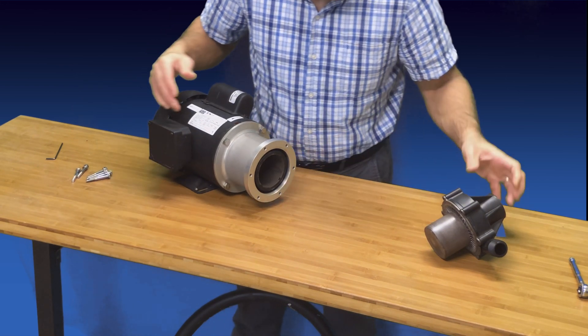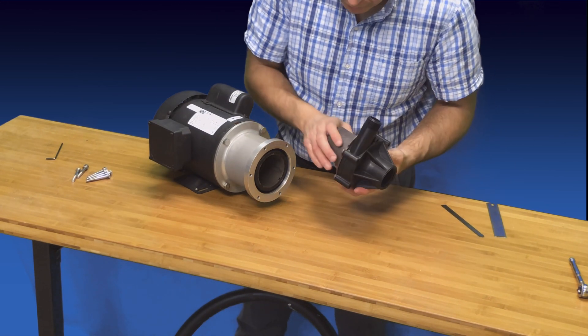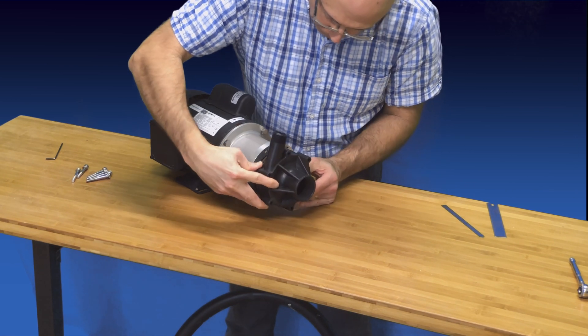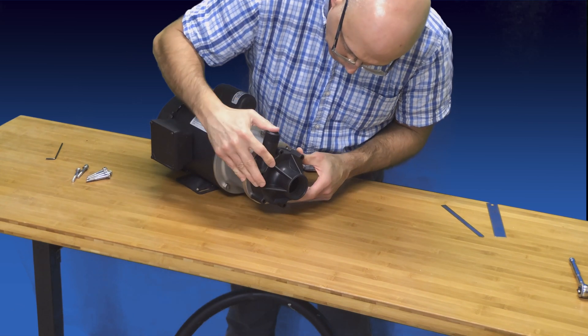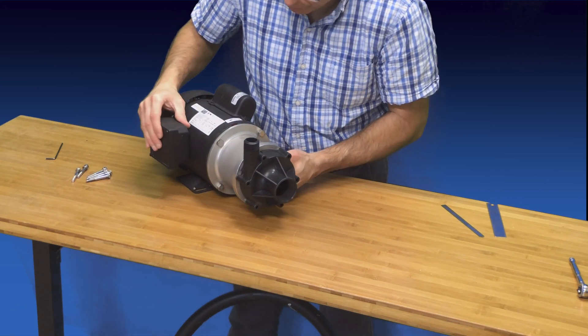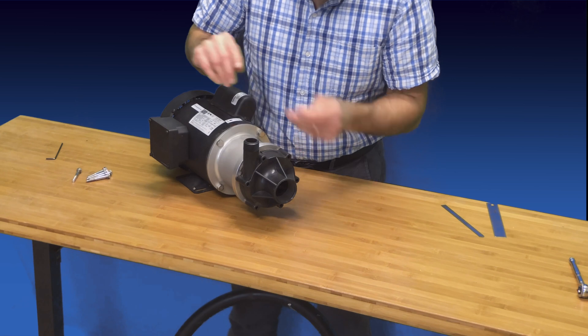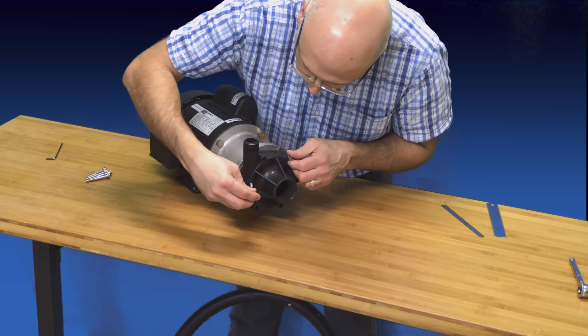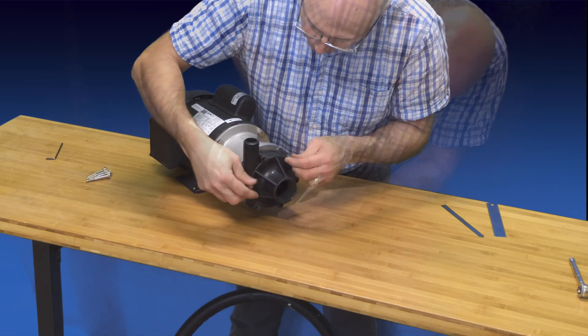Next, take the previously assembled wet end assembly and slip it into the just assembled power end assembly. Hold these two assemblies firmly in your grip as you bring them together, as the magnet forces will pull on them strongly. Align the bolt holes on these two assemblies, then install the screws to hold them together. Tighten all the screws with a wrench.